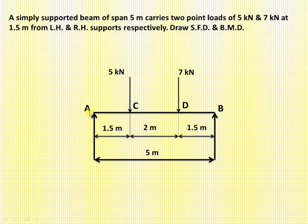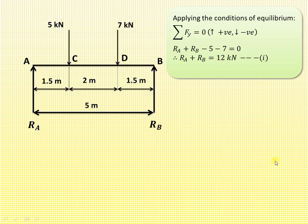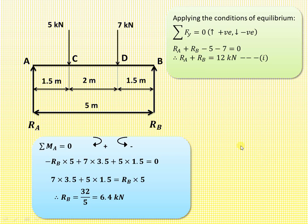The first step is to calculate the reactions at points A and B by applying the conditions of equilibrium. Applying the first condition, summation of Fy = 0, and assuming upward forces are positive and downward forces are negative: RA and RB act upward (positive), while the 5 kN and 7 kN loads act downward (negative). So RA + RB − 5 − 7 = 0, giving RA + RB = 12 kN. Call this Equation 1.